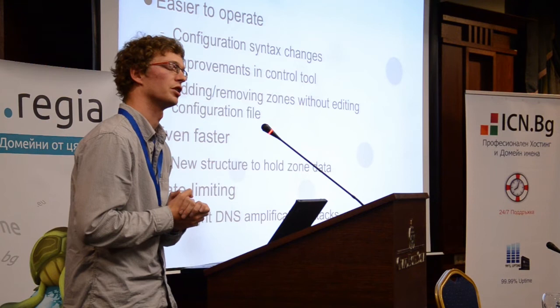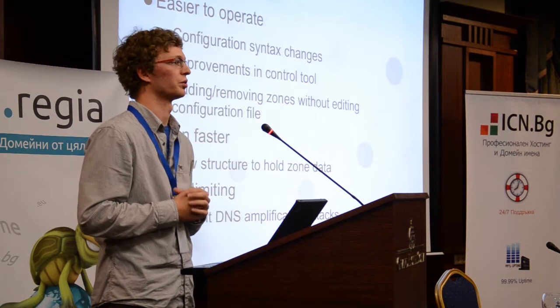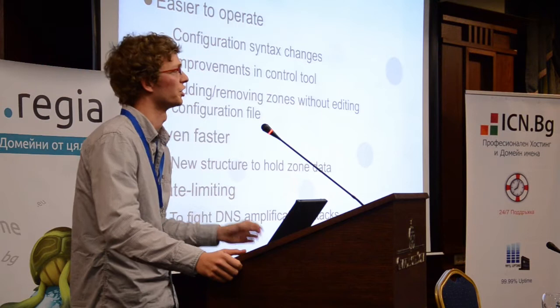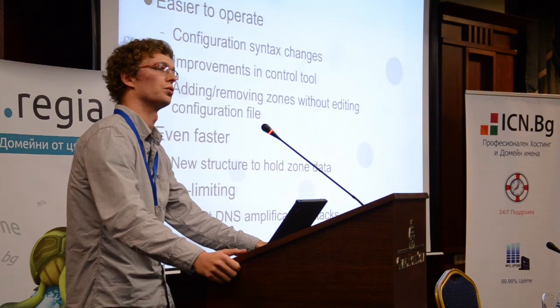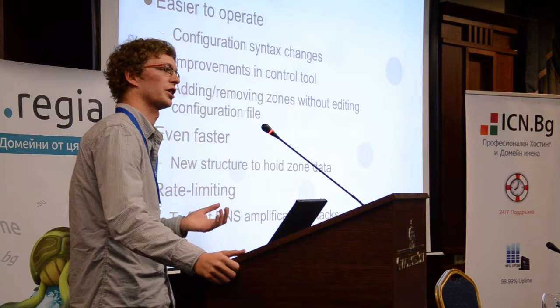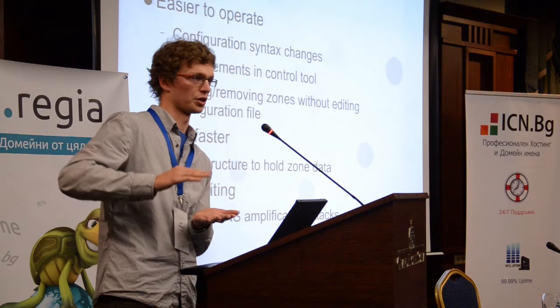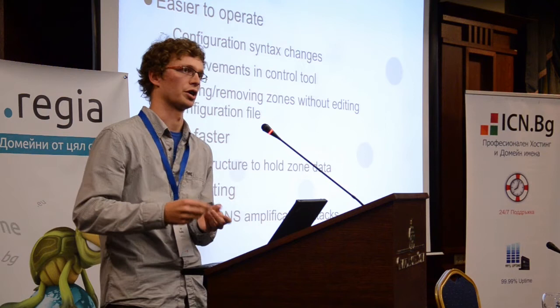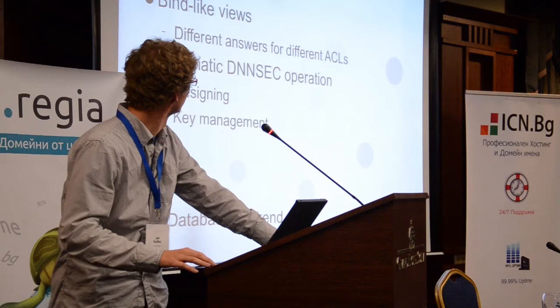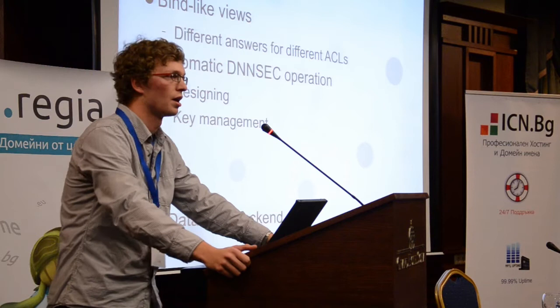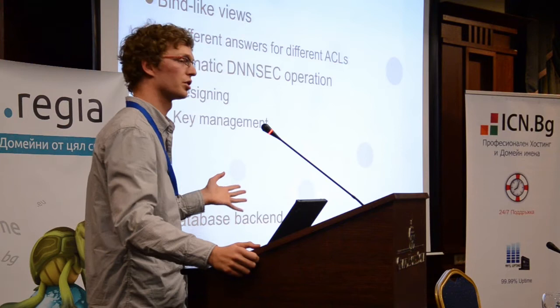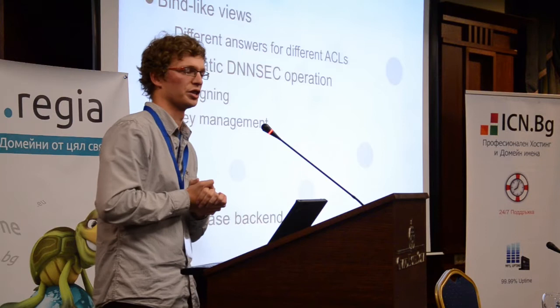We want to make it even faster, but the speed of responses is not always a good thing — the faster the server is, the more viable it is to use for DNS amplification attacks. So we want to add support for detection of these attacks, and when such an attack is detected, the server is going to slow the rate of responses being generated by the attacker. We also want to add something called split-horizon — bind came up with this, there is no RFC for it, but people want it.